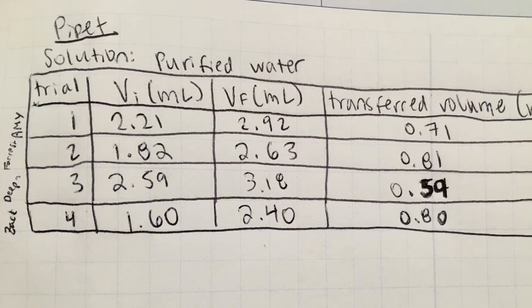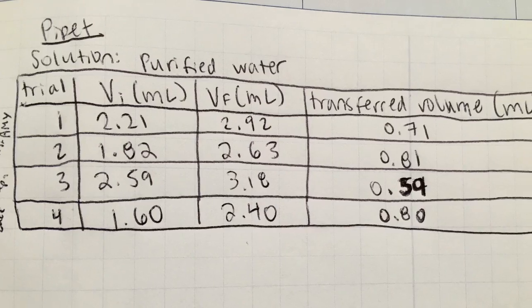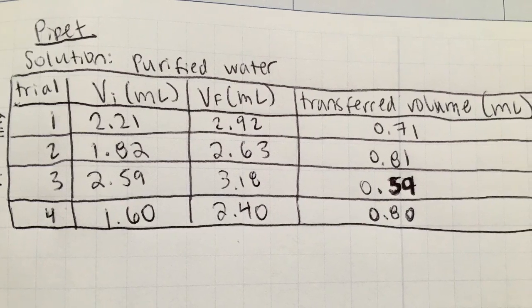These are our calculations for our initial volumes, final volumes, and the volume transferred. As you can see, all the volumes are measured to two decimal places.